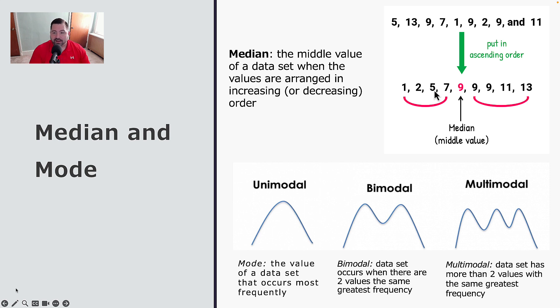The middle value would be calculated when you have a data set. In this case, there is one, two, three, four, five, six, seven, eight, nine numbers. So if I did four from the left and four from the right, this extra value in the middle would represent the middle number. So in this case, the middle value or the median would be nine.